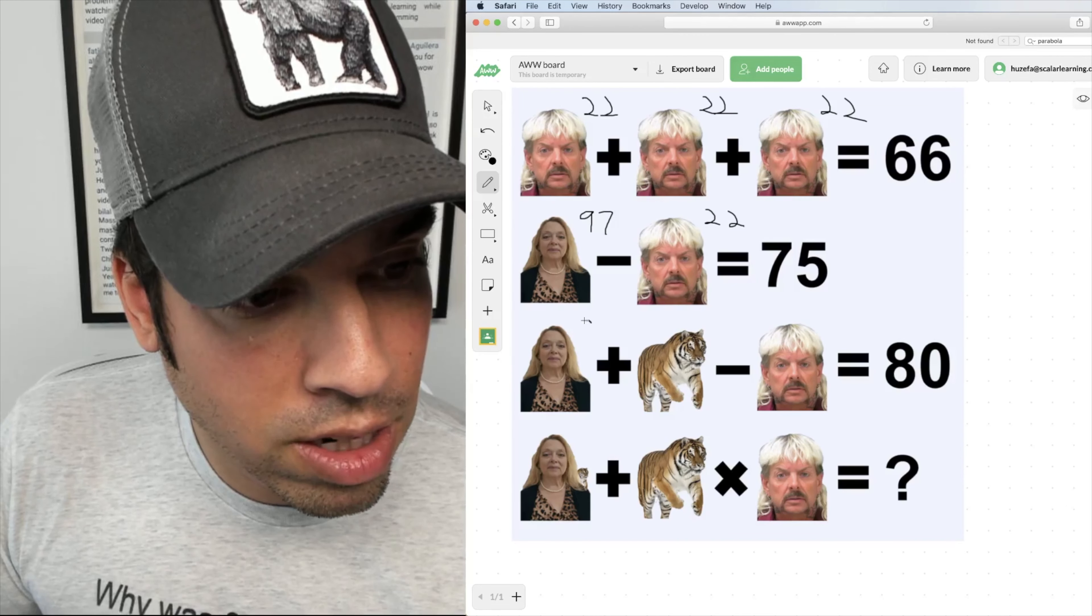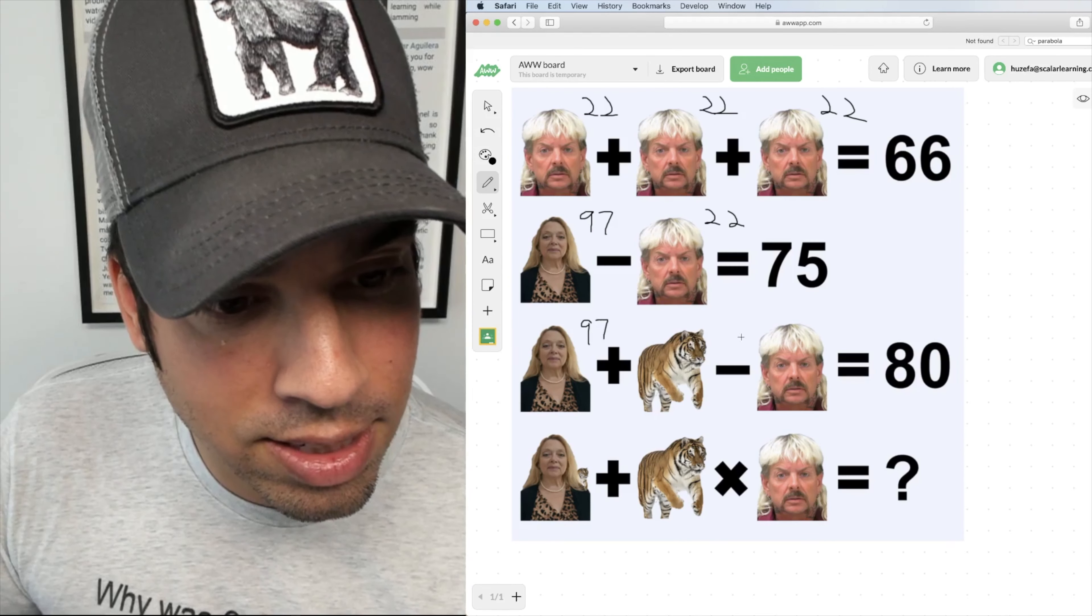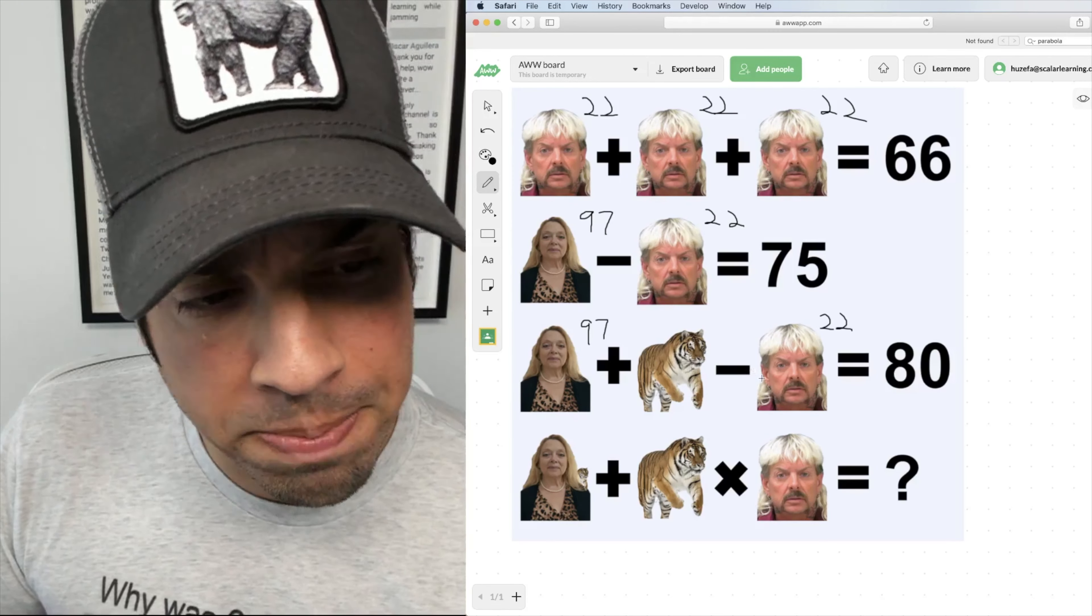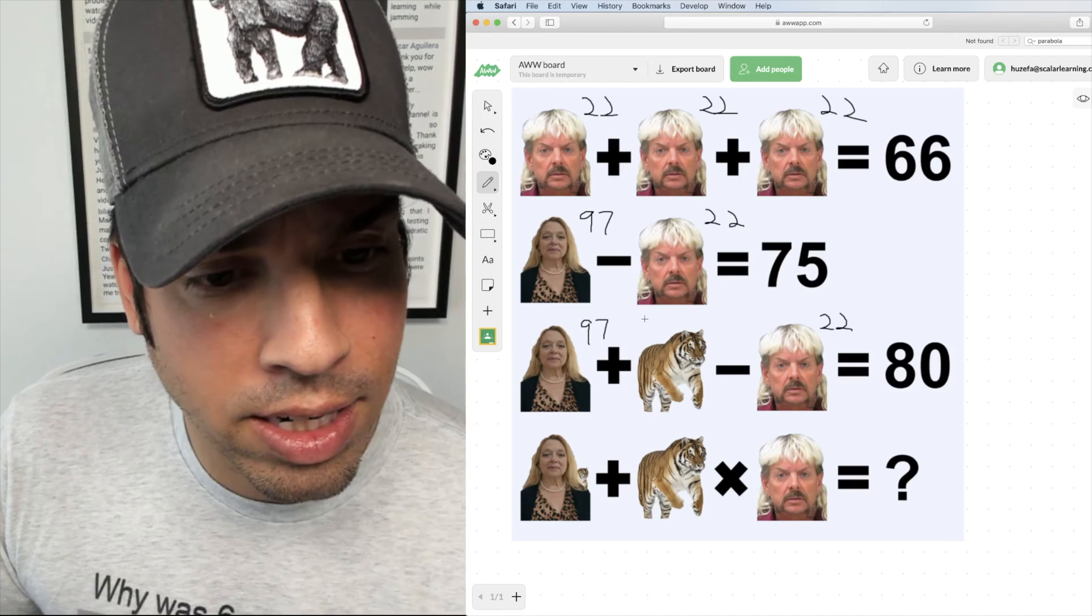Now I come down here and I know Carol Baskin is 97, Joe Exotic is 22. What is the tiger? So another little shortcut, we know that all of these add up to 80.